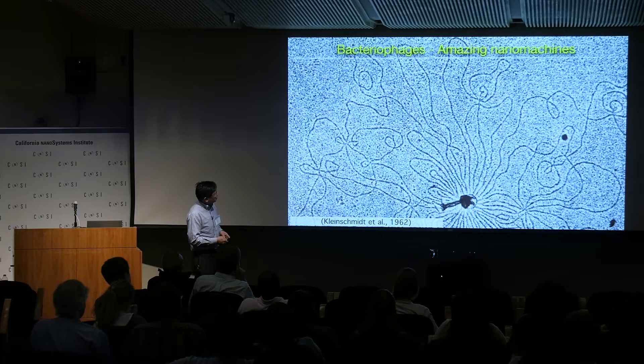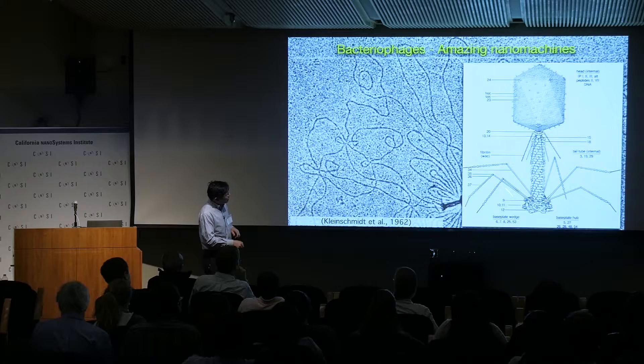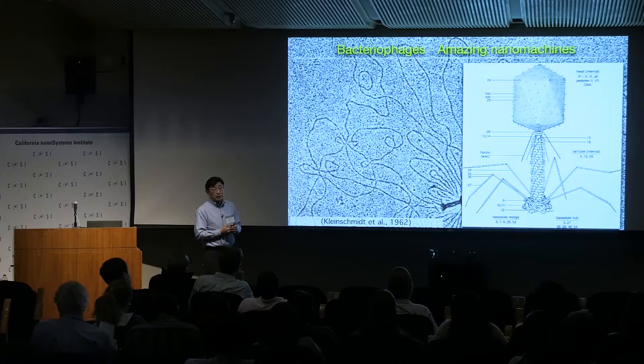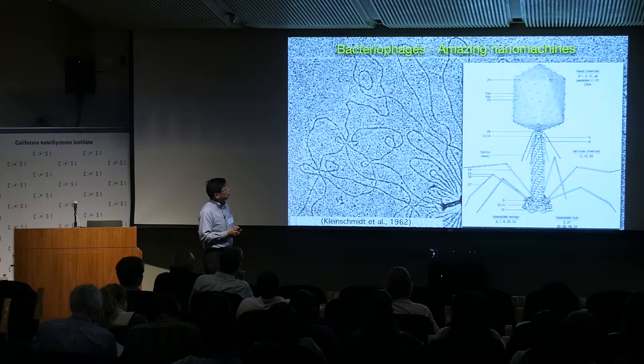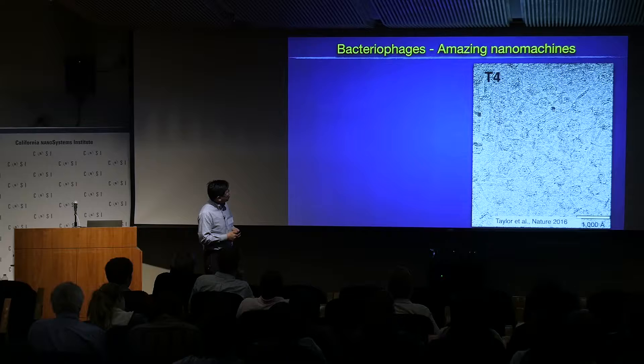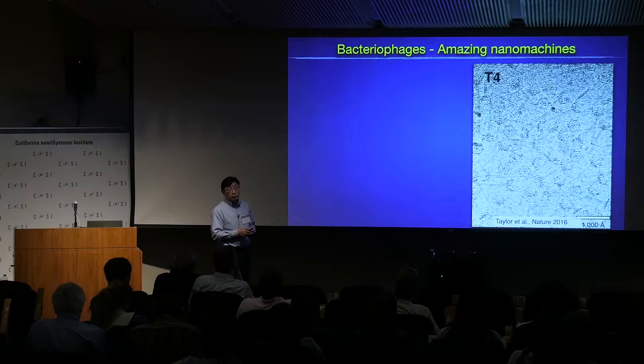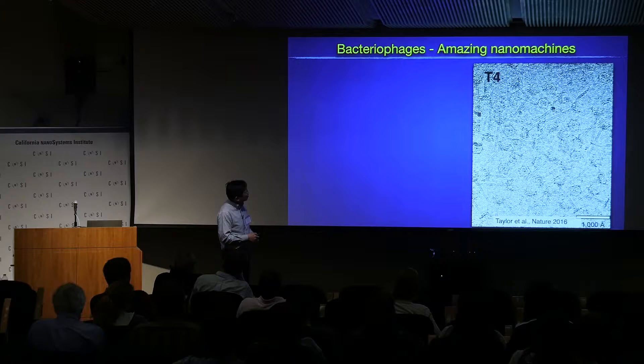This is one of the classic phages, T4. We have a beautiful capsid with tail, with all this beautiful machinery to allow the phage to assemble DNA in the capsid and eject it into the host bacteria. T4 is a very good system and has served as a model system for developing cryo-EM.